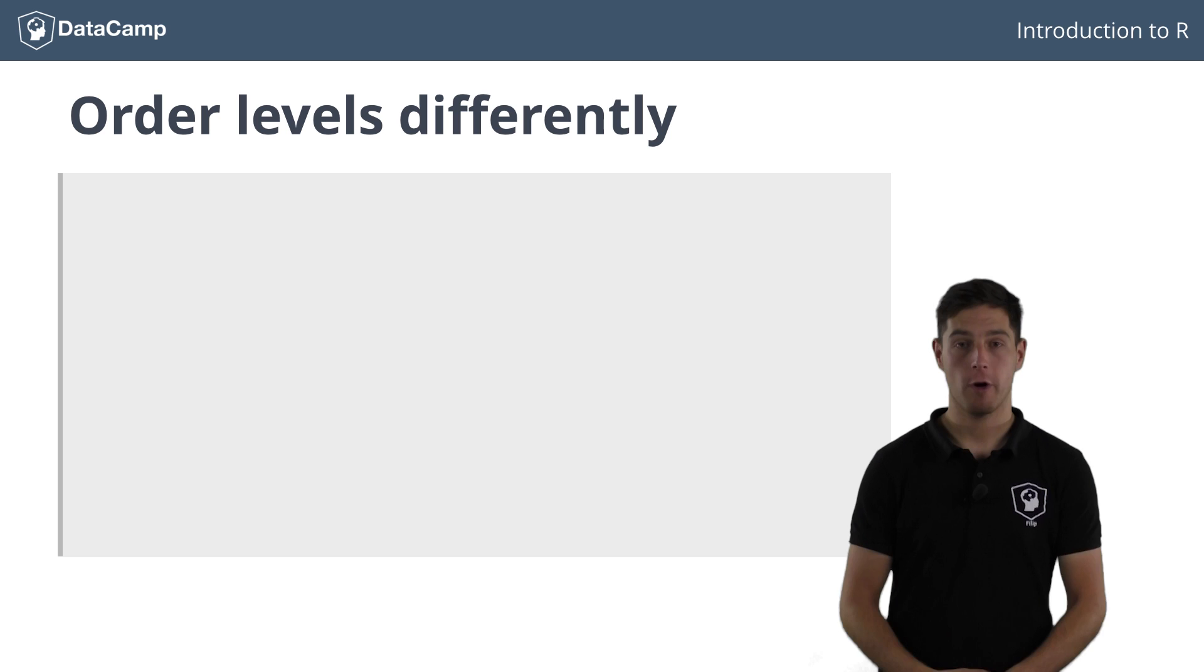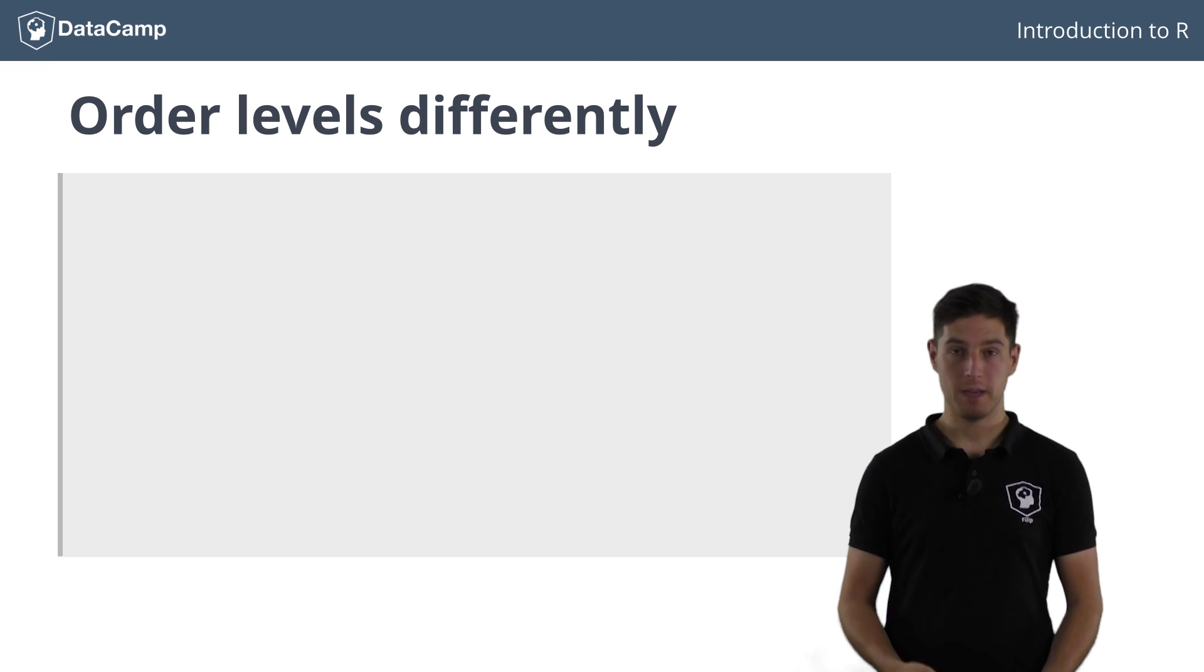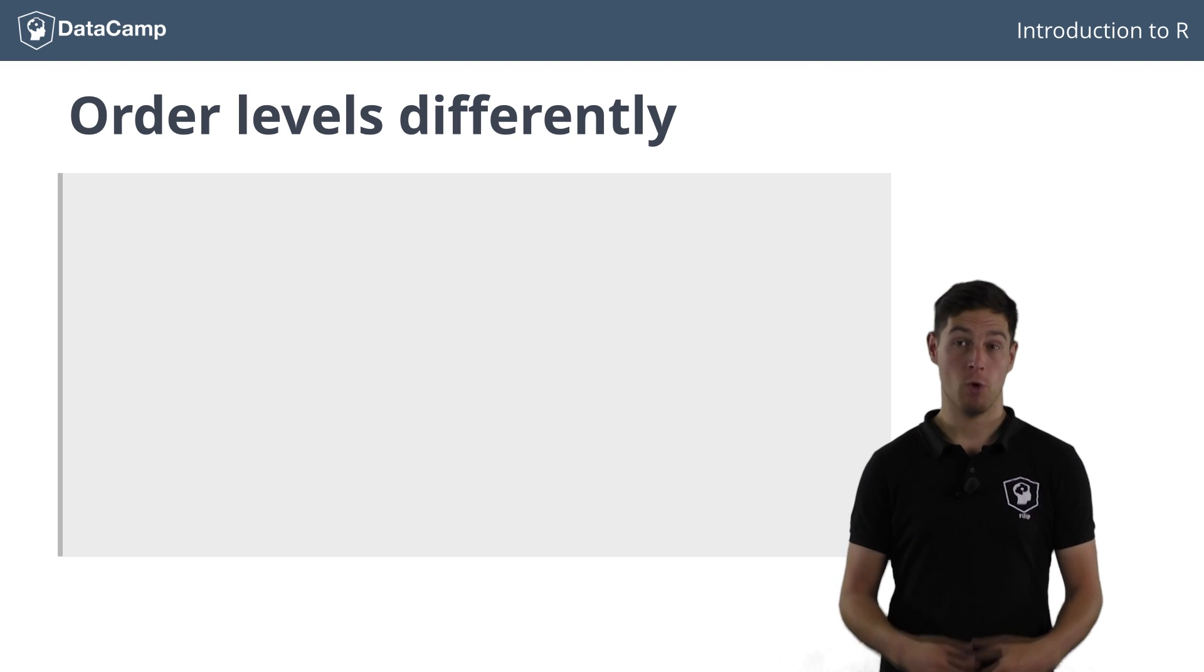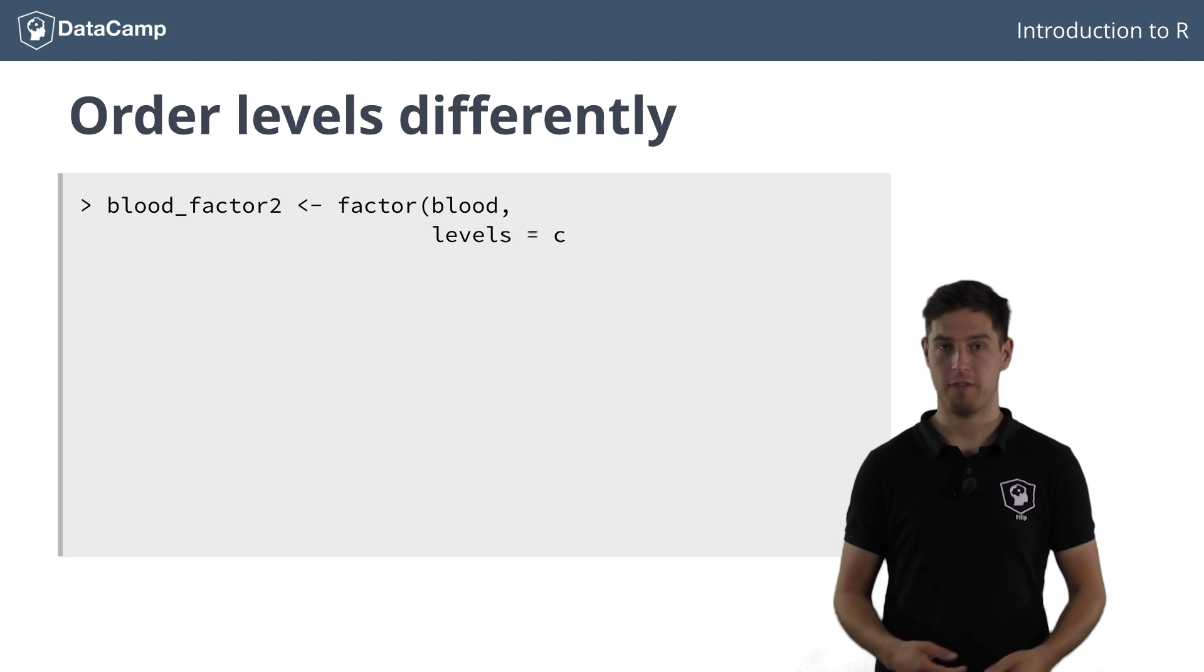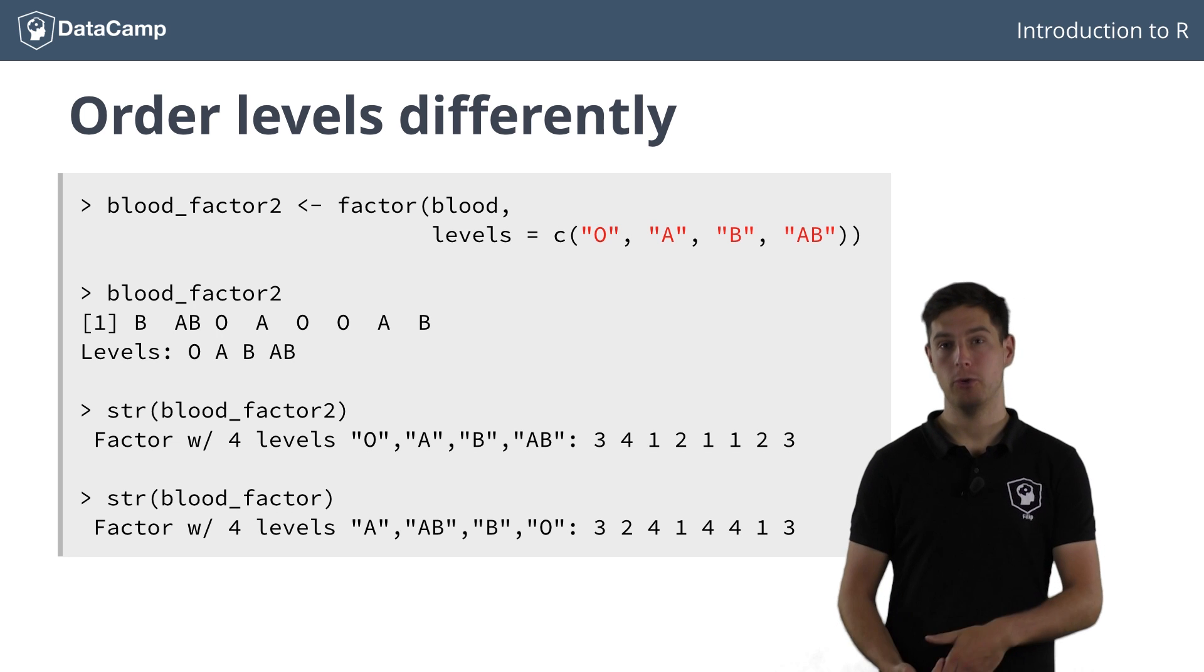As I said before, R automatically infers the factor levels from the vector you pass it and orders them alphabetically. If you want a different order in the levels, you can specify the levels argument inside the factor function. If you compare the structures of blood_factor and blood_factor_2, you'll see that the encoding is different now.